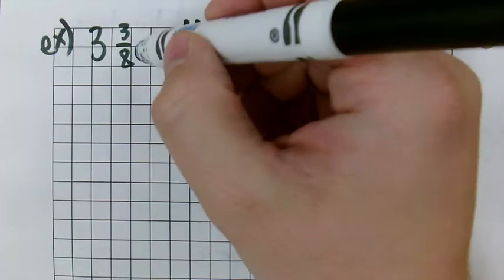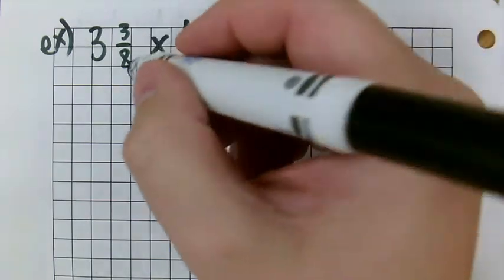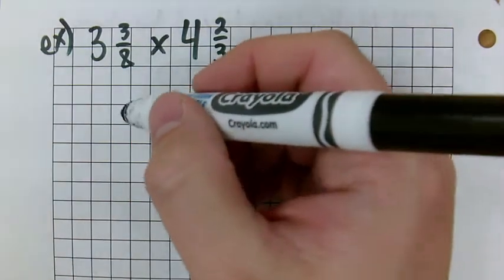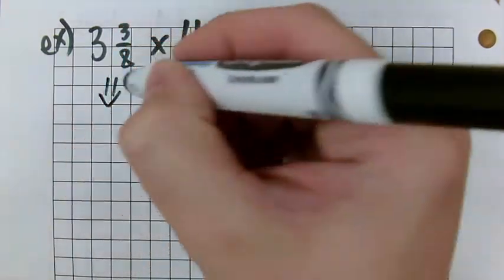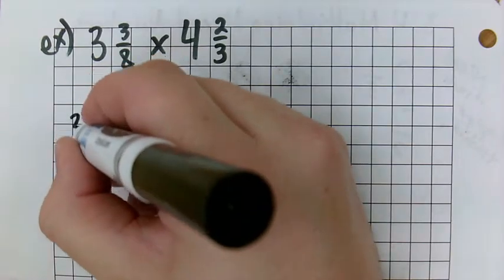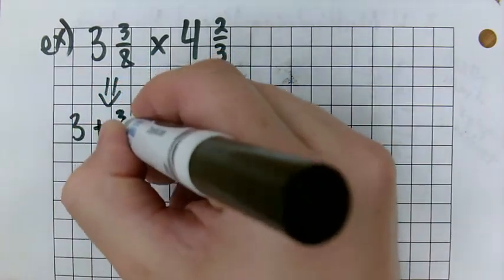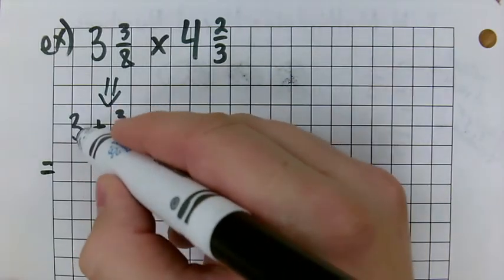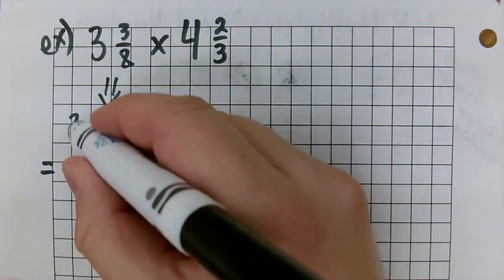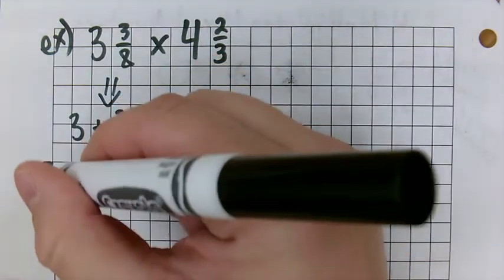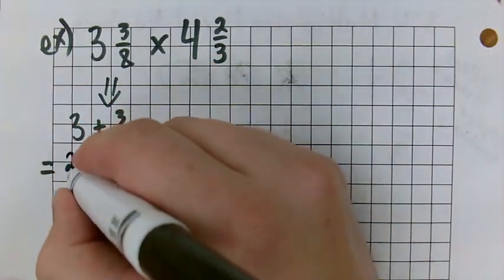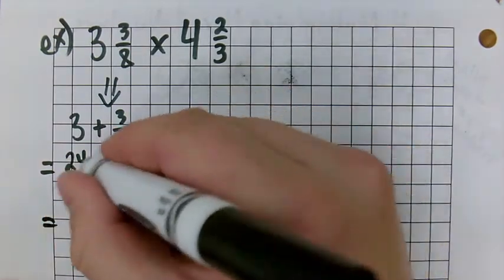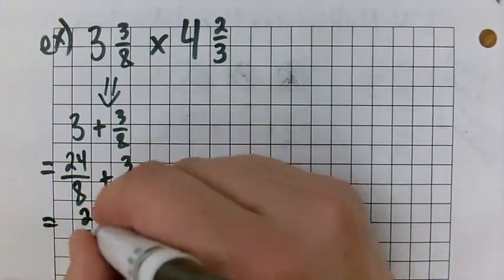Here's an example. 3 and 3 eighths times 4 and 2 thirds. Well, let's take these and make them into improper fractions. So let's start with this one here. 3 and 3 eighths. Remember, that's the same thing as 3 plus 3 eighths, right? And if we make this into a fraction that has 8 as its denominator, well, 3 times 8 is 24. So this is 24 eighths plus 3 eighths. Now that they have the same denominator added up, 27 eighths.